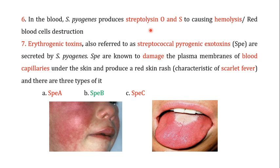When S. pyogenes reaches the blood, it produces streptolysin O and streptolysin S, which cause hemolysis of red blood cells — that is, destruction of the red blood cells.